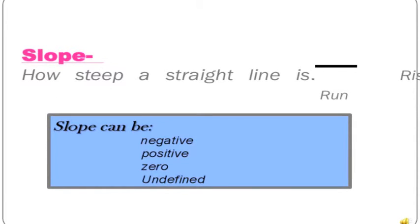Slope means how steep a straight line is. The equation can also be written as rise over run. The slope can be negative, positive, zero, or undefined.